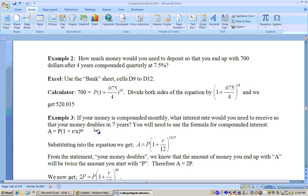Okay, let's go ahead and do this one. It says, if your money is compounded monthly, what interest rate would you need to receive so that your money doubles in seven years? Again, we need to use this same formula right here, A equals P times 1 plus r over n to the nt.